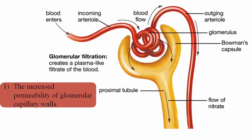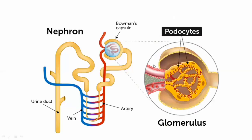There are two factors that regulate filtration. The first is the increased permeability of glomerular capillary walls. The walls of these capillaries contain pores that allow passage of substances and solutes into Bowman's capsule. The lining is composed of endothelial cells and also contains podocytes, which allow passage of all substances except large plasma proteins — those are too large to pass through.